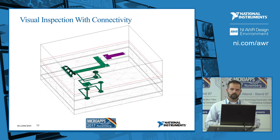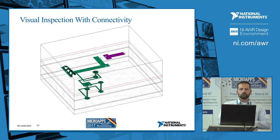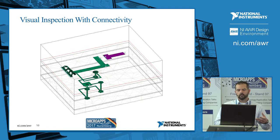As you start looking at the registration error and edge tolerances — the different manufacturing variations — with the layer modifiers, you could accidentally disconnect metal, or you could accidentally short metal as you're moving and growing and shrinking these. So we have visual inspection with connectivity where you can, at least in a simple matching network or circuit, be able to detect changes in your connectivity.